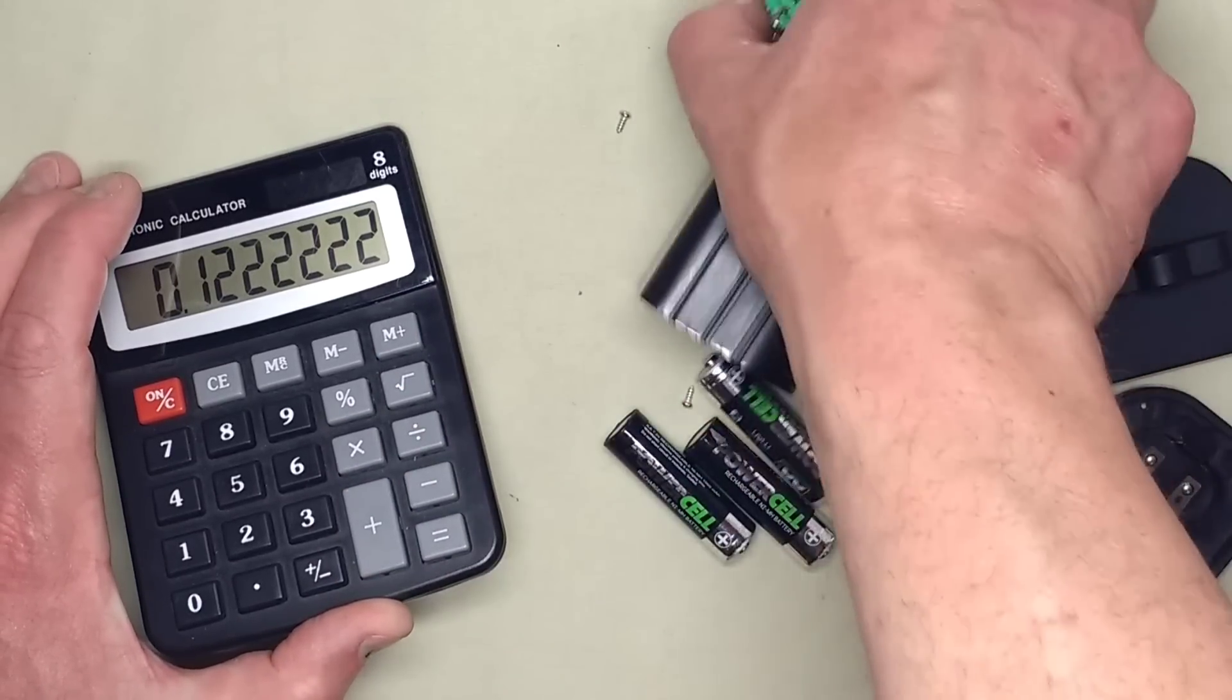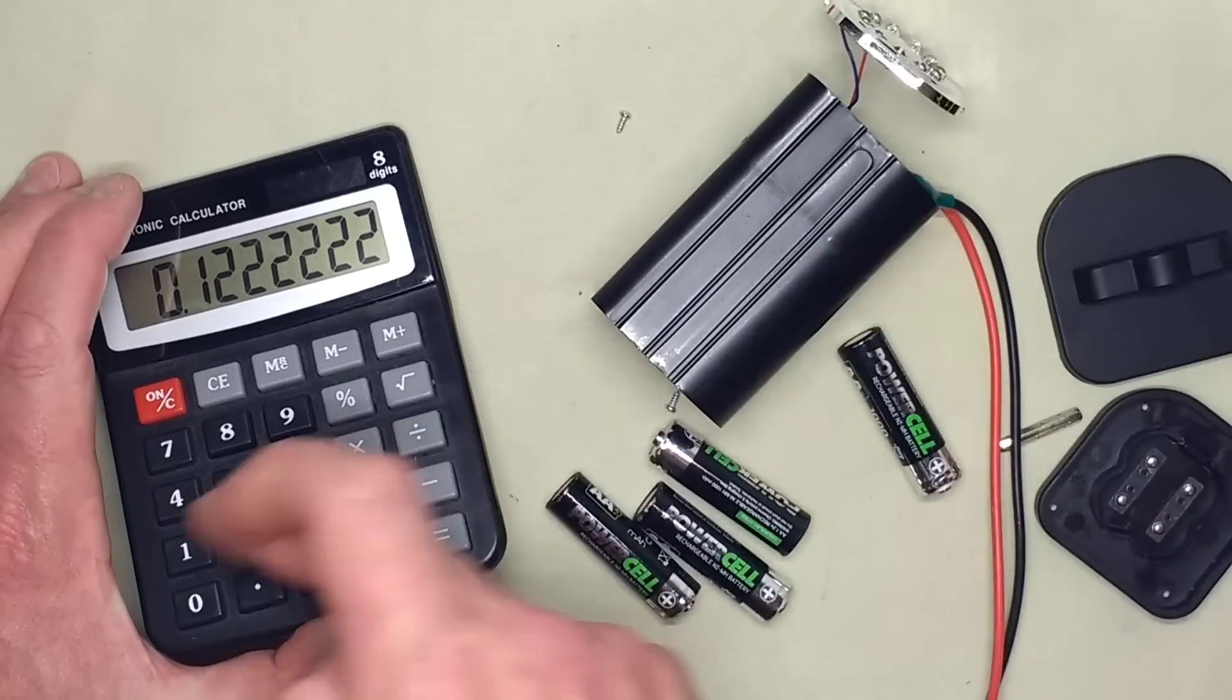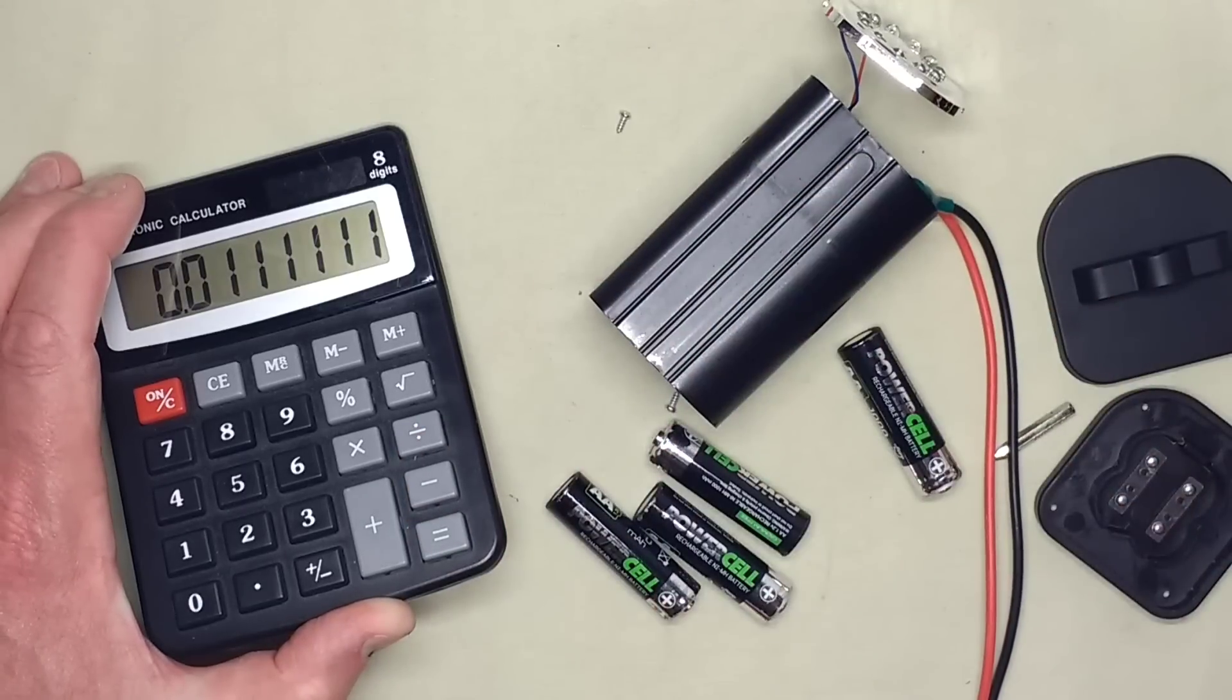There are 1, 2, 3, 4, 5, 6, 7, 8, 9, 10, 11 equals, you know, that's about 11 milliamps per LED. That is very, very acceptable.